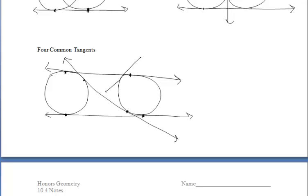And then finally for four common tangents, we can draw the outer tangents, the external ones, and then the internal ones which form an X shape.